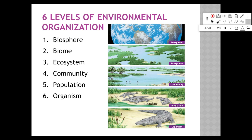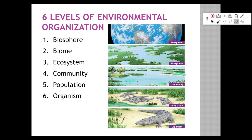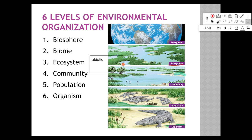A community is different species of living things living together in the same area. You see birds, crabs, crocodiles, grass, and trees — all living things of different species living together. These are all examples of a community. You can also think of Austin as a community: humans, cats, dogs, bugs, trees, and grass all living in one area.